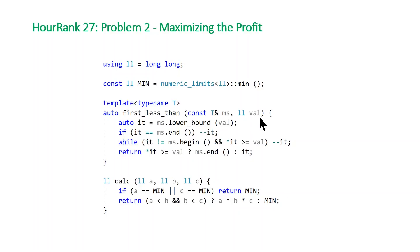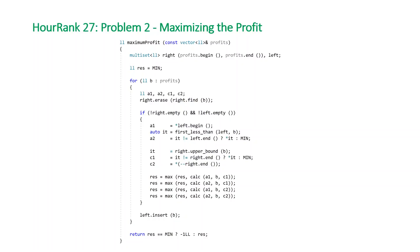The function returns either past-the-last or the iterator pointing to a valid value less than what was passed in. The calc function takes a, b, and c: as long as a and c aren't the minimum value, it returns their product, also verifying that a less than b and b less than c, otherwise returning minimum. In our main function maximum_profit, we take a vector of long longs profits and return a long long. We construct two multisets: right is initialized with a range constructor containing all values from profits, and left uses the default constructor and starts empty. We set result res to minimum, then enter our range-based for loop.